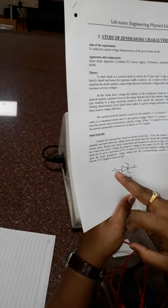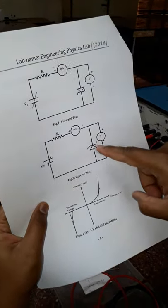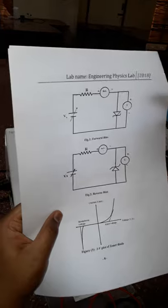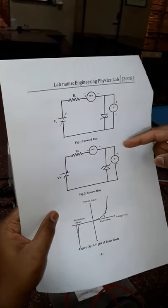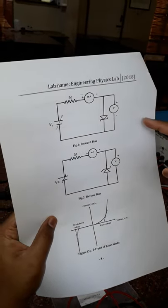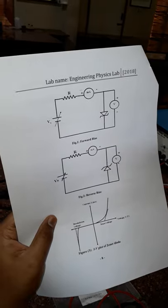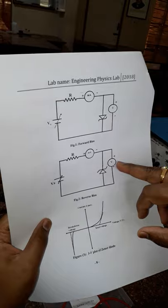Here, this is the Zener diode — this is the P-type and N-type. Here is the circuit for forward bias condition and this is the circuit for reverse bias condition. In forward bias condition, the positive terminal is connected to the positive terminal of the battery and negative to negative. In reverse bias condition, negative is connected to positive terminal of the battery and positive to negative terminal of the battery. Here, this is the milliammeter and this is the voltmeter.